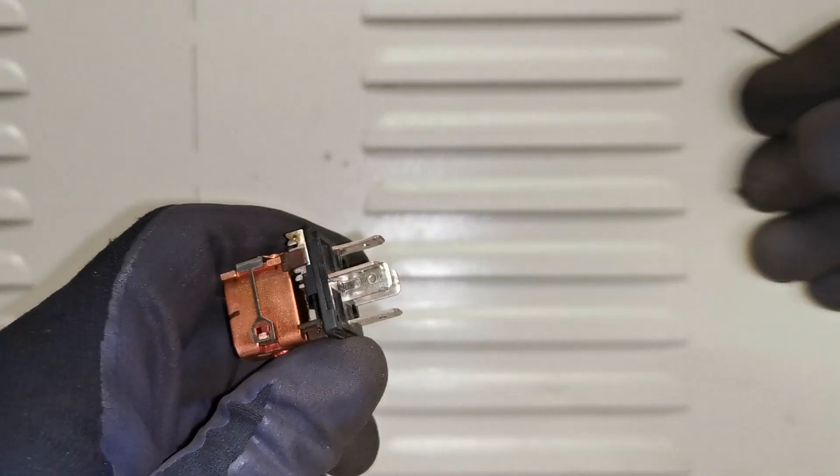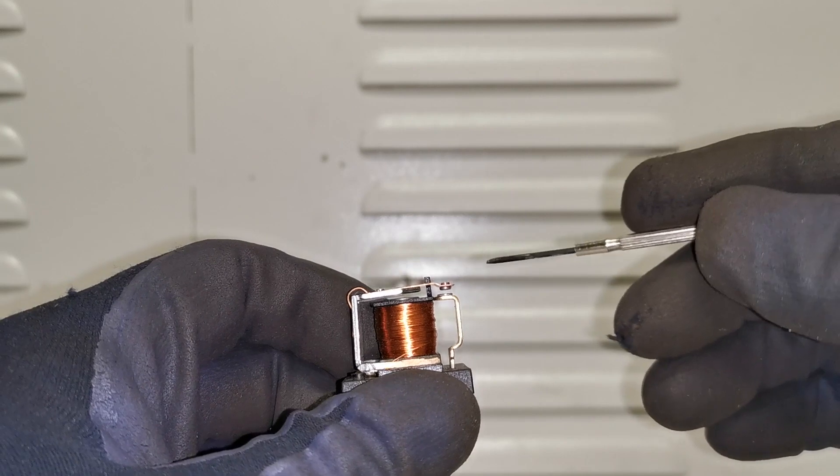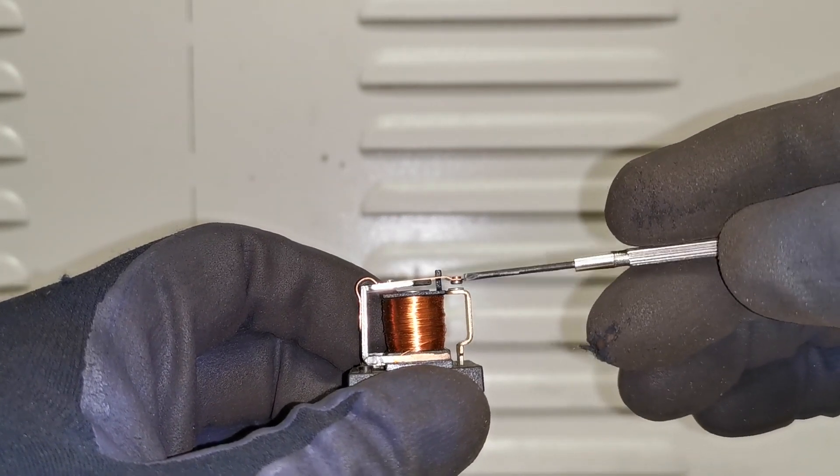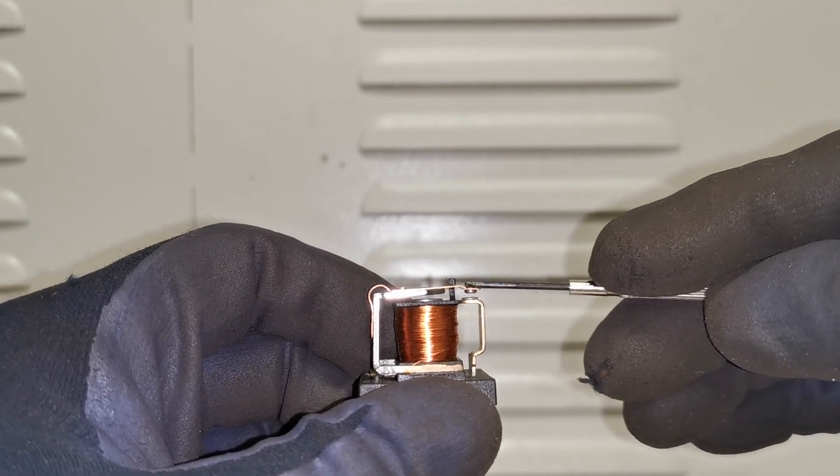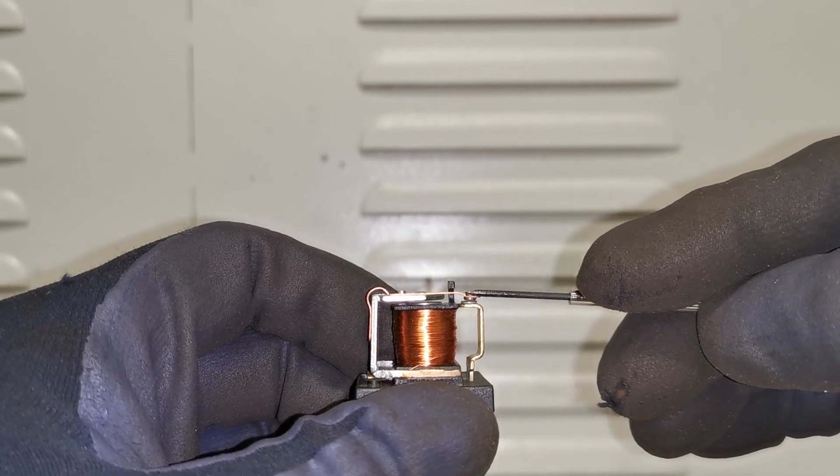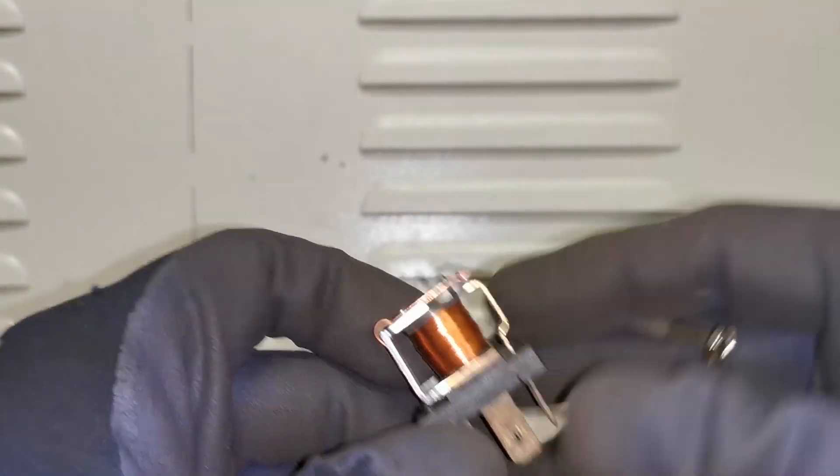Now when we open up the relay this is the faulty one this is the functional one. 85 and 86 goes through this coil creates an electromagnet that then closes the contact. That's usually how these work so you get power in, closes the contact and that comes on and off as requested.